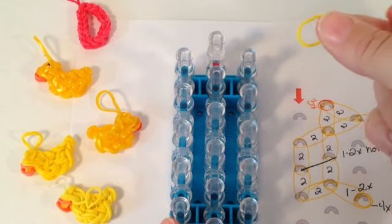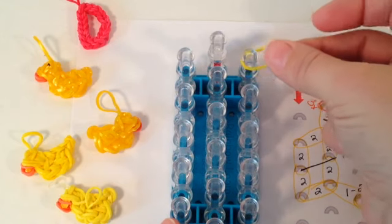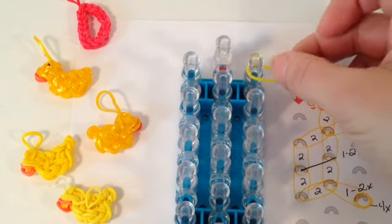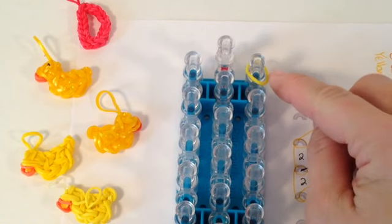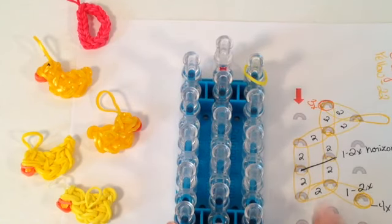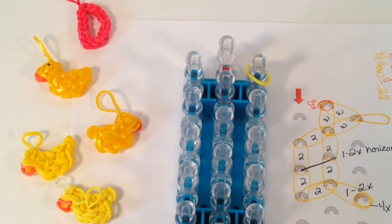Take a single band, this is what I call a dangle band, place it on the upper right peg and just allow it to dangle over the loom. This project will use one orange rubber band and about 22 yellow rubber bands.